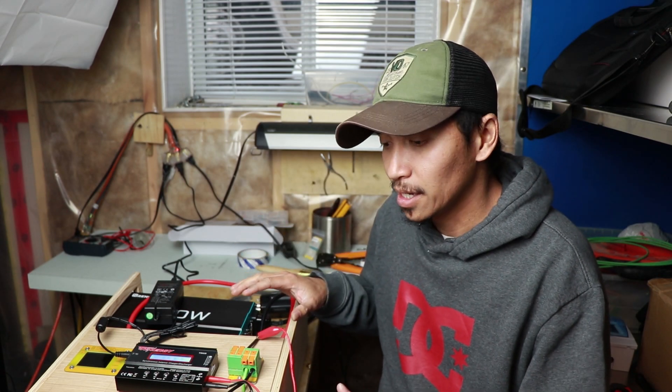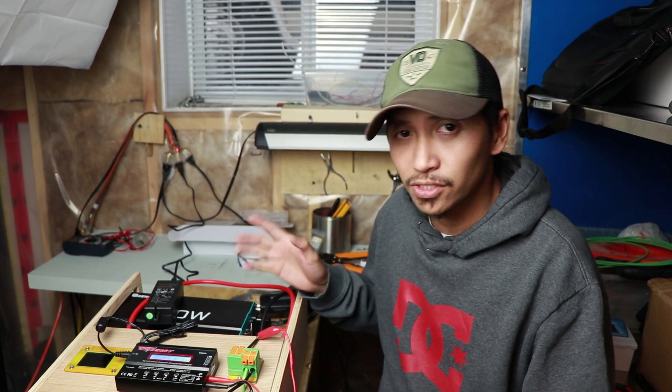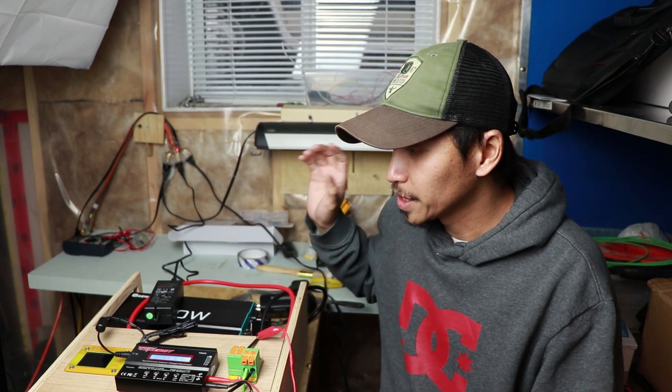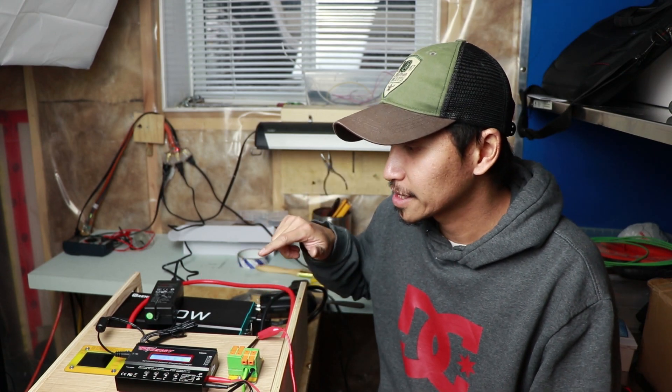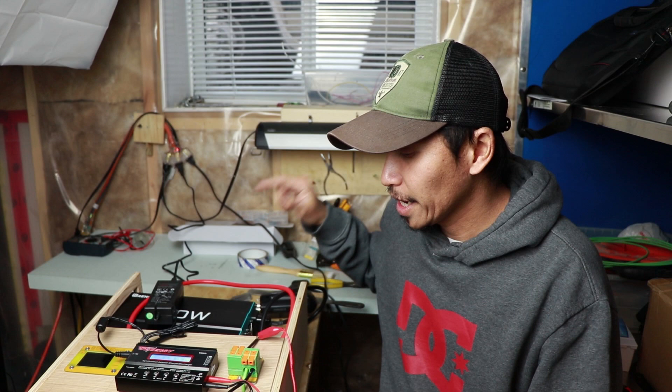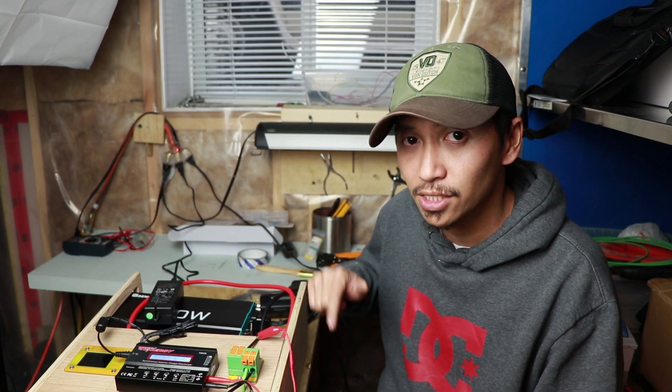Okay. So this is my full setup for my do-it-yourself power wall with Electrodacus SBMS0 and the DSSR20 for the solar charge controller. Again guys, thank you very much for sticking around with me.